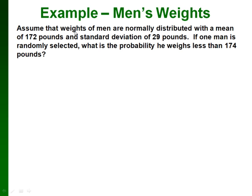Here's an example. If we assume that men's weights are normally distributed with a mean of 172 pounds and a standard deviation of 29 pounds, then if one man is randomly selected, what is the probability he weighs less than 174 pounds? Well, this is a normal distribution, but it's non-standard because the mean is 172 and the standard deviation is 29.